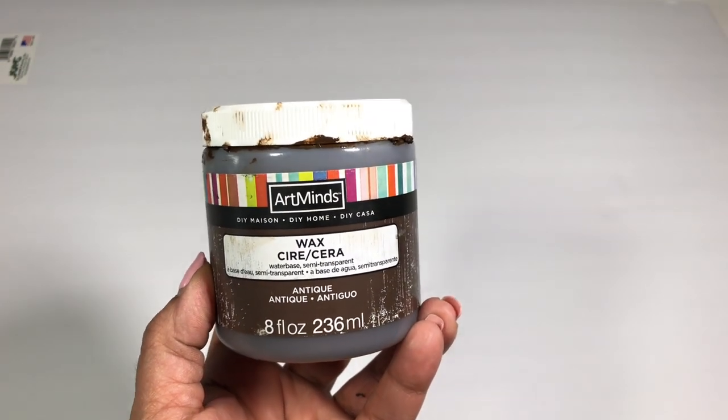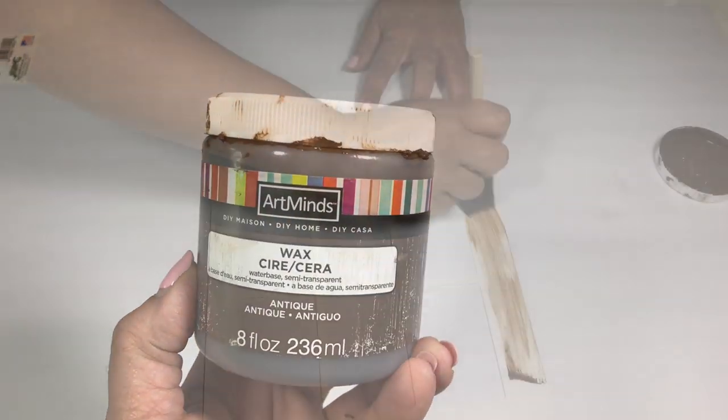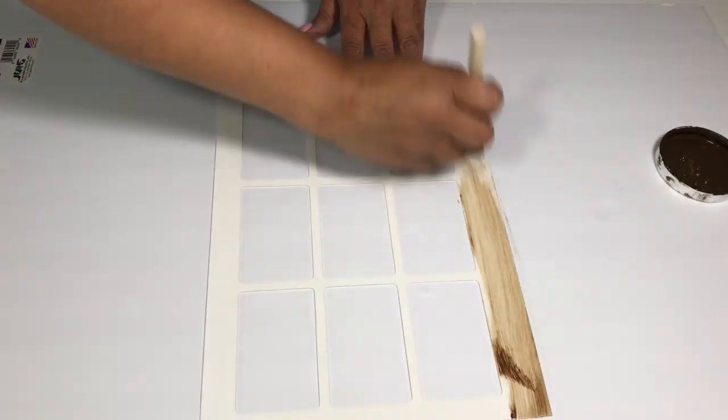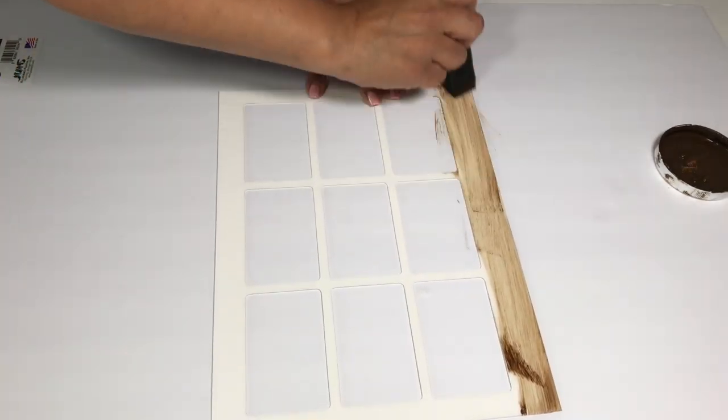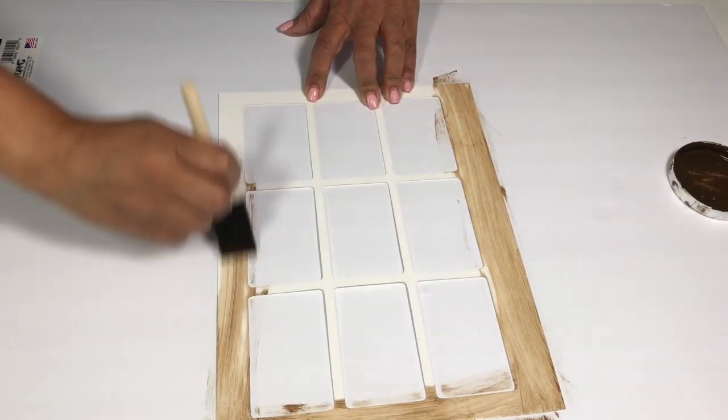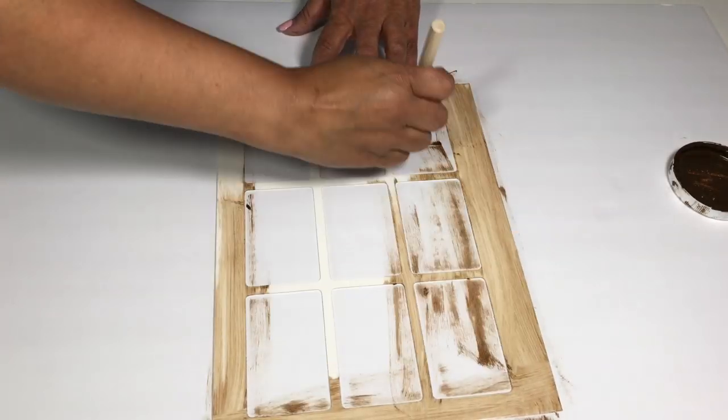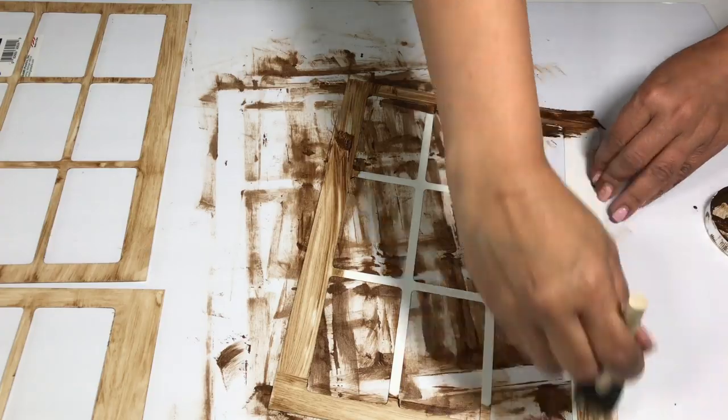So the first thing I do is take my Art Minds Antique Wax and give these sheets two coats each. I honestly love this wax. It's my go-to method for making things that are not wood look like wood. I prefer it over paint, and it also protects your piece.